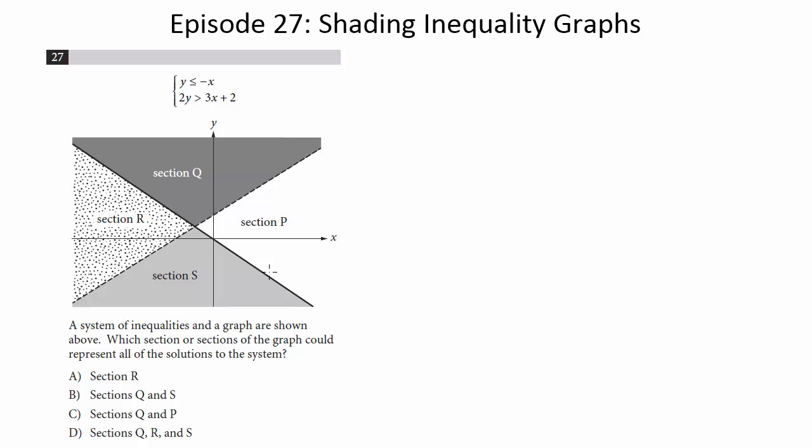So here is the key. The first thing we need to do is make sure that both of our inequalities are in the y equals mx plus b form because that will let us easily see what the equation on the line is going to be and then hopefully allow us to use that to figure out which graph is which.